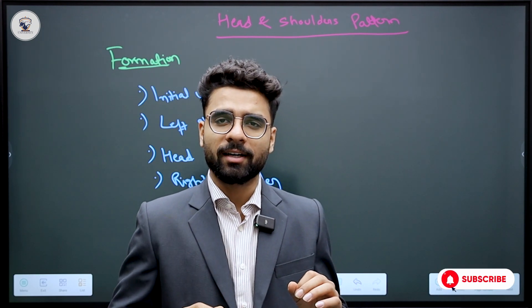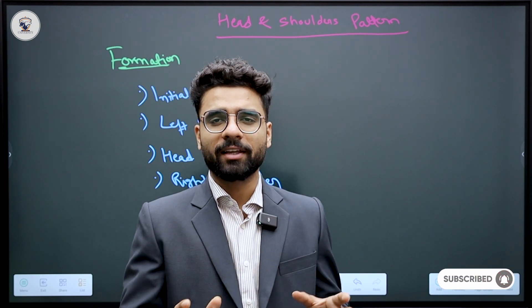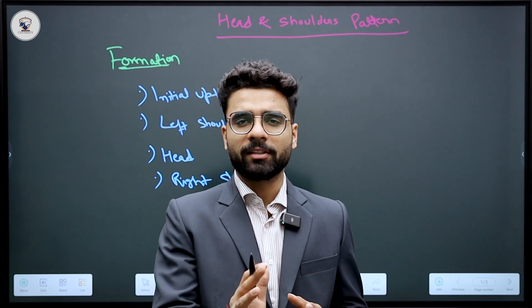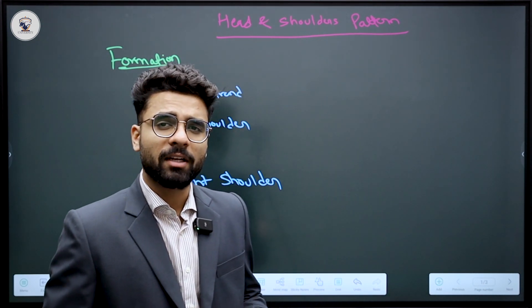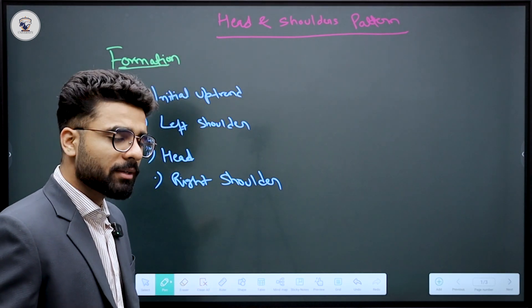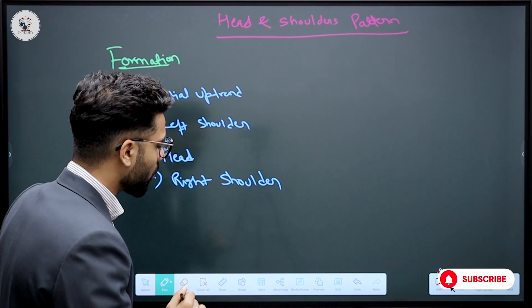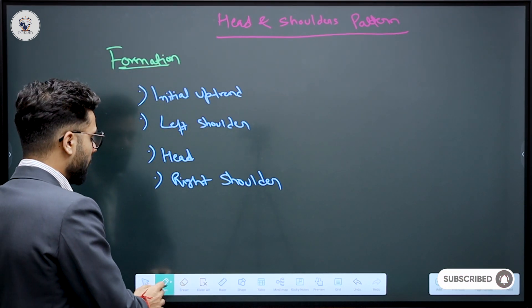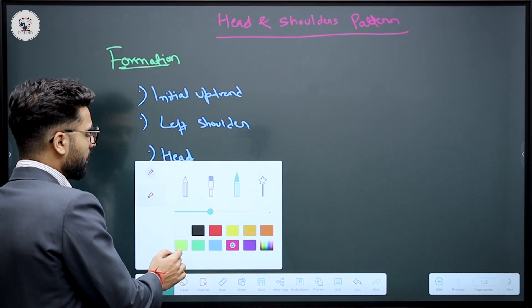Where to make entry and exit? How will it be identified? We will discuss all the things. First of all, I will tell you how it is made. In the market, there will be an uptrend momentum because it is a bearish reverse signal. There is an uptrend already in the market.